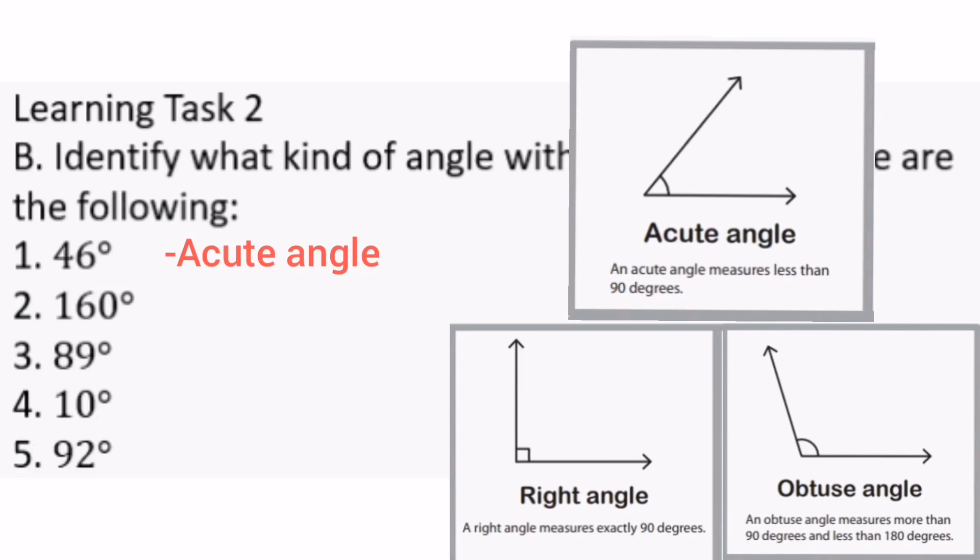Number 2, 160 degrees is greater than 90 degrees, so it is an obtuse angle.